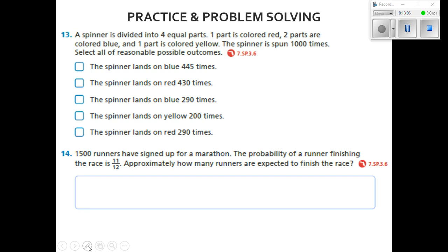The spinner is divided into four equal parts. Let's go ahead and draw one out real quick. It says one part is colored red, two parts are colored blue, so we'll put this as blue and this one blue as well, and one colored is yellow. All right, the spinner is spun 1,000 times. Select all the possible outcomes.